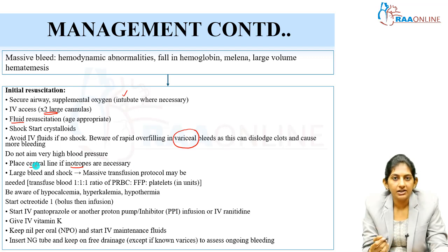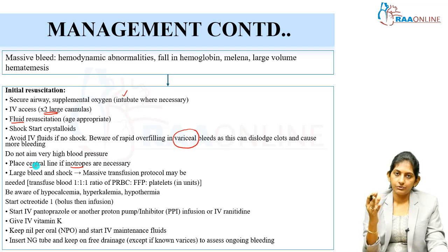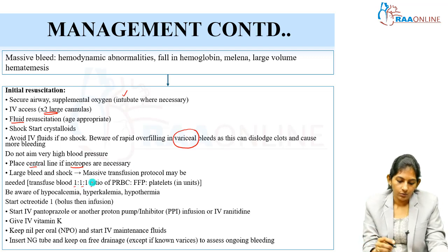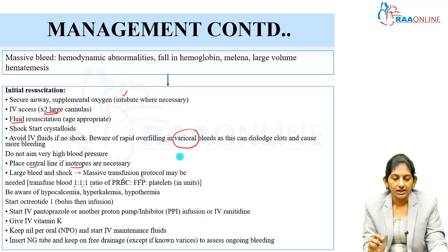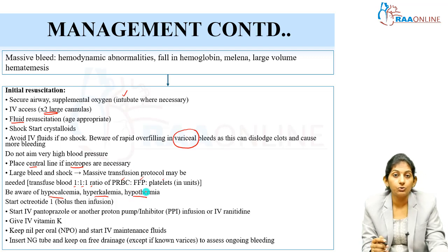If there is a large bleed with shock, you have given saline boluses and started inotropes but bleeding continues, go for transfusion. For a massive bleed, transfusion protocol is 1:1:1 — one unit of PRBC, one unit of FFP, and one unit of platelets. During blood transfusion, carefully monitor electrolytes — watch for hyperkalemia, hypocalcemia, and hypothermia, which are metabolic complications of massive blood transfusion.